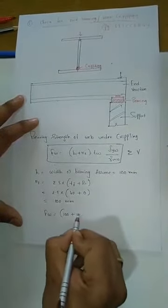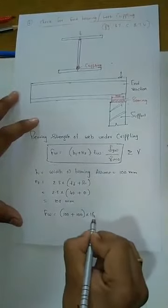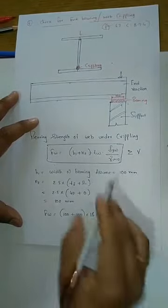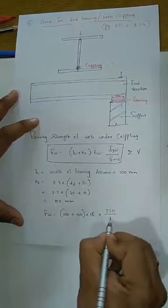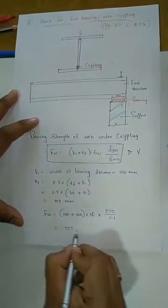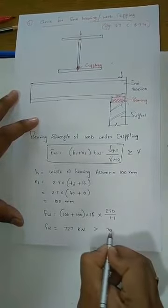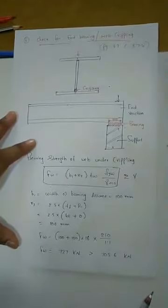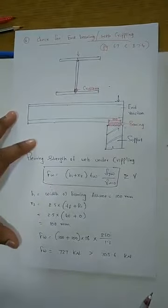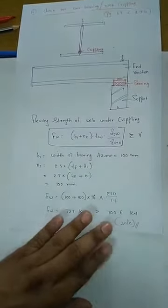Substituting the values: Fw = (100 + 100) × 16 × 250 / 1.1 = 727 kN, which should be greater than or equal to 705.6 kN. So your web is safe under web crippling.